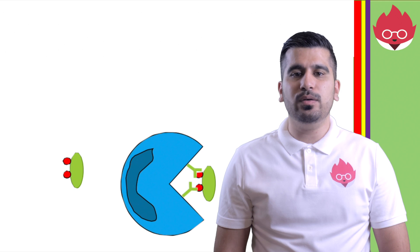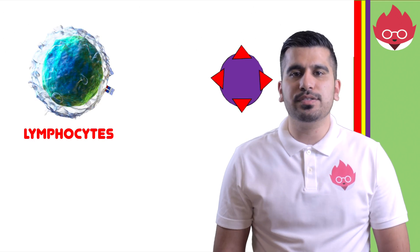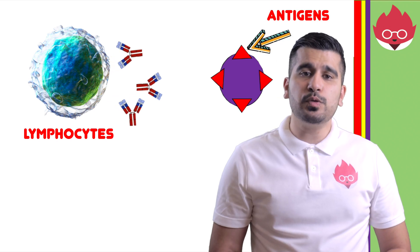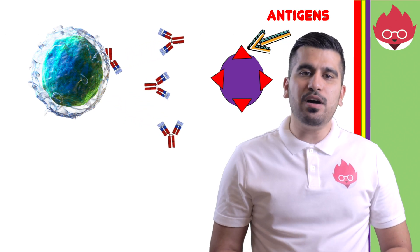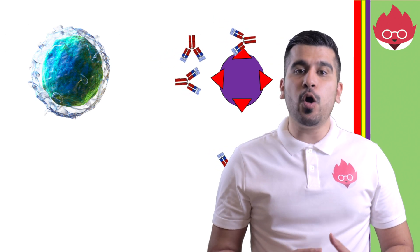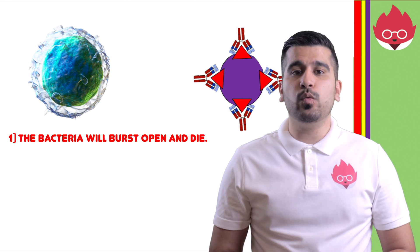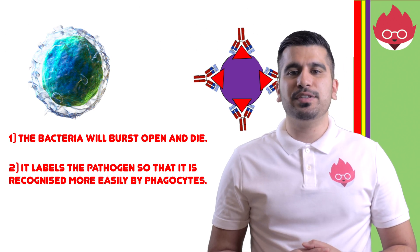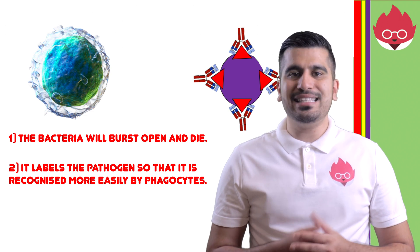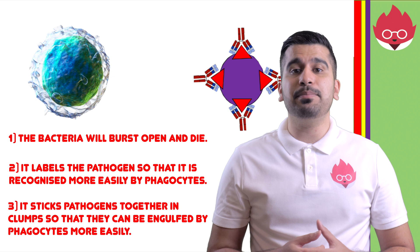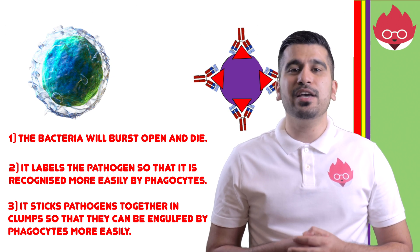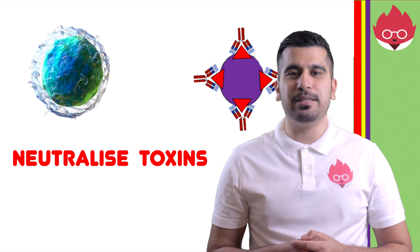Lymphocytes detect markers on the pathogen called antigens. Even our normal cells contain antigens, but it's those markers that the lymphocytes detect as being foreign that prompt them to release Y-shaped proteins called antibodies. These antibodies have a complementary shape to the antigens which they stick to. Once the antibodies bind to the pathogens, three things can happen: the bacteria will burst open and die; it labels the pathogen so that it can be recognised more easily by phagocytes; it sticks pathogens together in clumps so that they can be easily engulfed by phagocytes. Antibodies can also neutralise toxins produced by the pathogen.